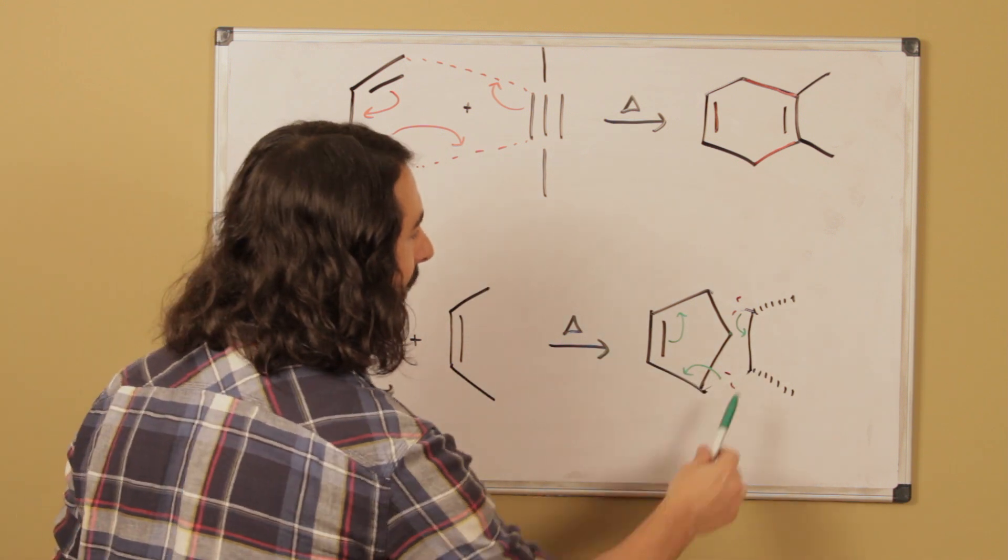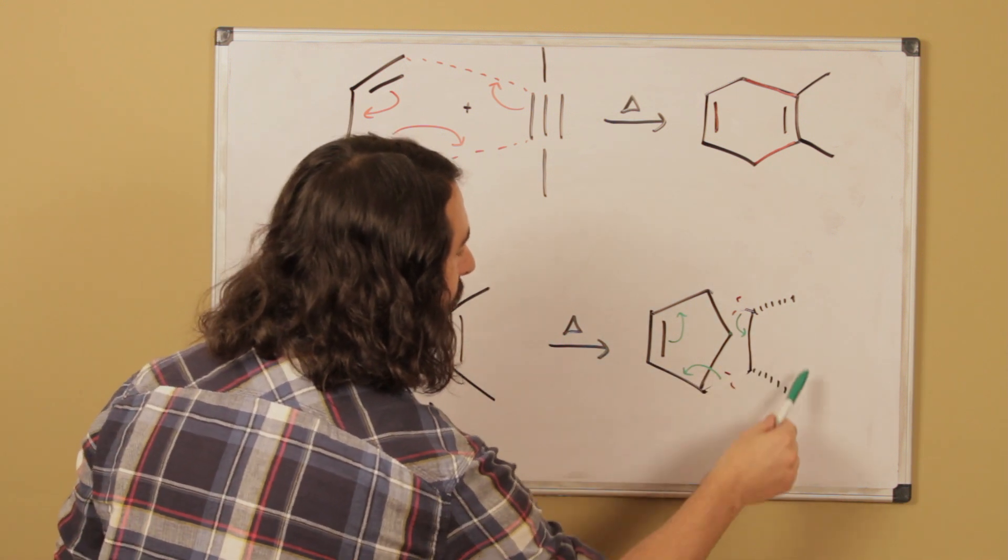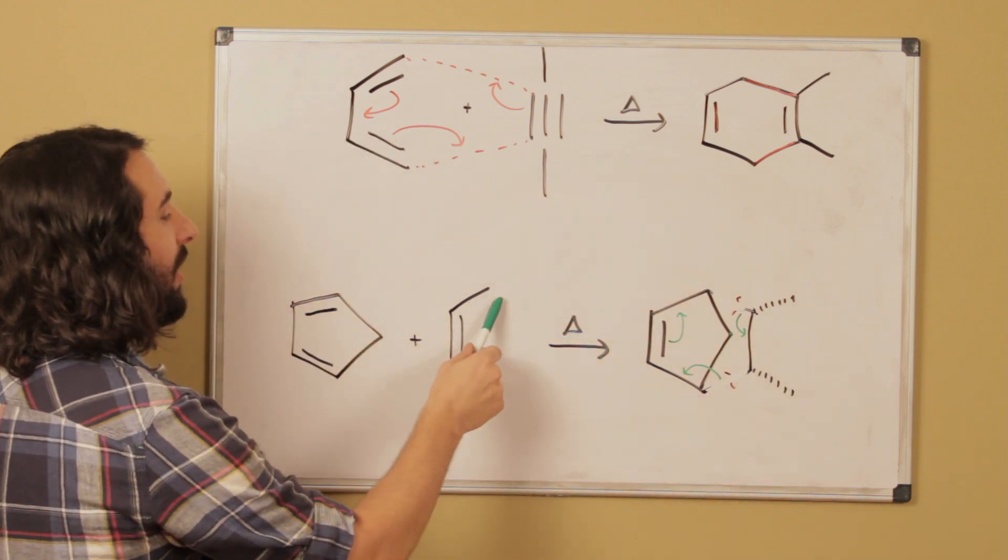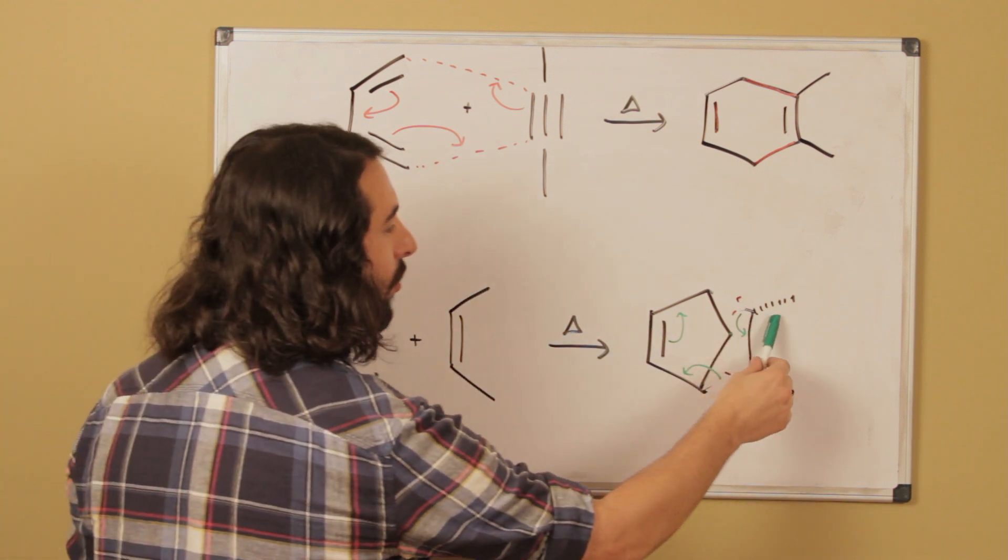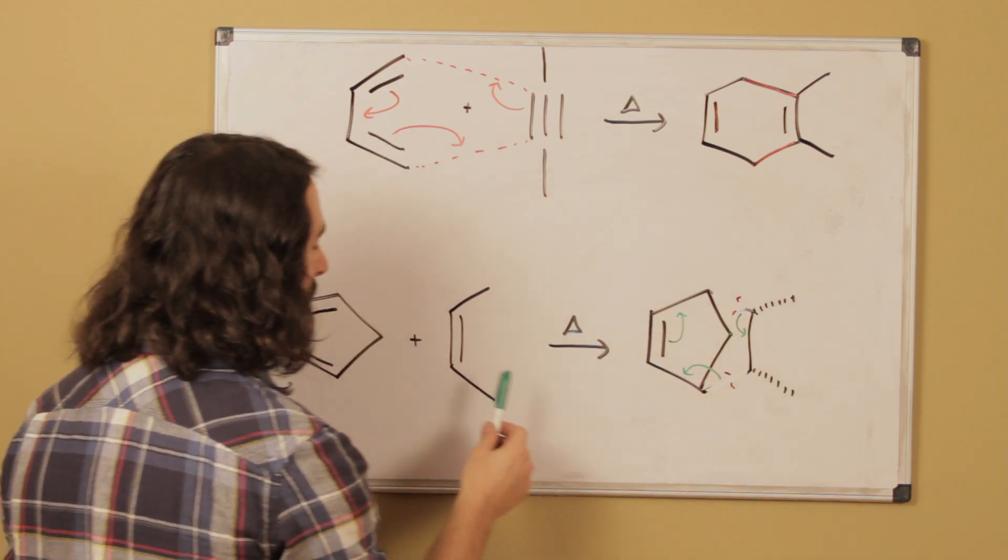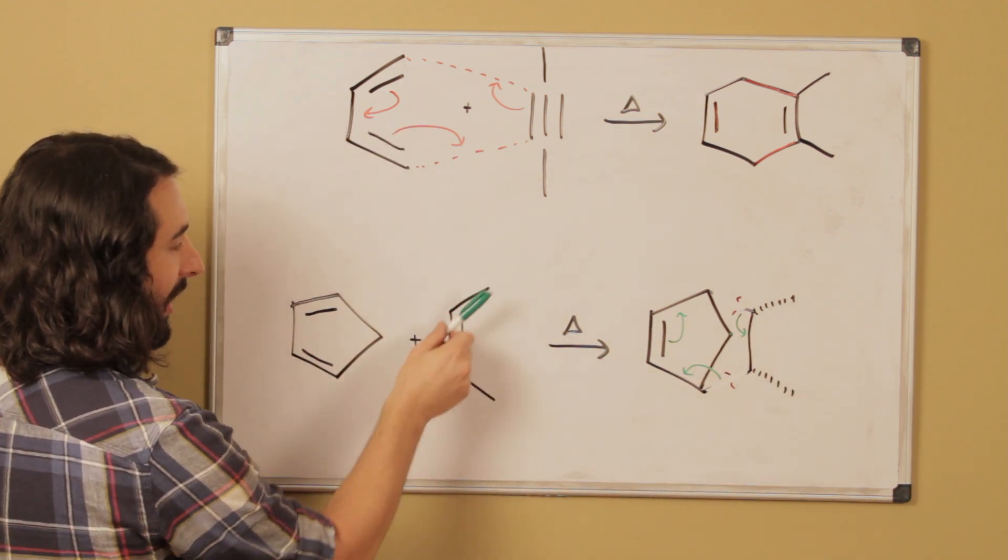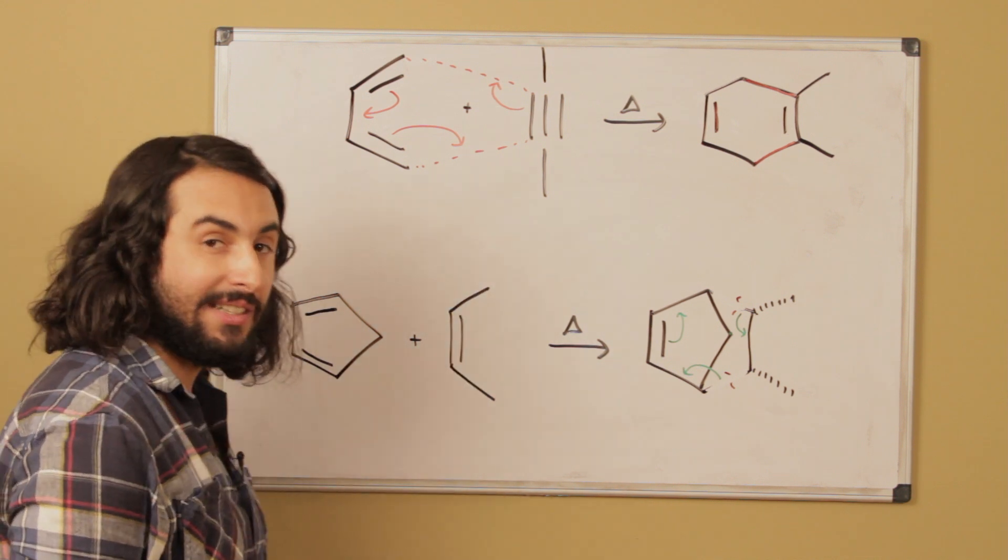And in terms of stereochemistry, because these were cis to one another on the product, we must have had a cis or Z alkene as opposed to E. If this had been one dash and one wedge, we would know that it would be an E alkene instead as the dienophile.